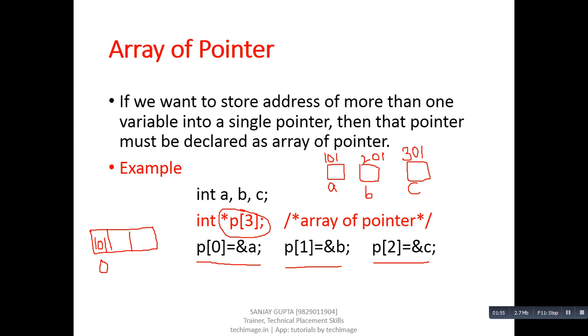And this complete location is known as P. Now at index number 1 we can assign address 201 which is the address of B. And at index number 2 we can assign 301 which is address of C.